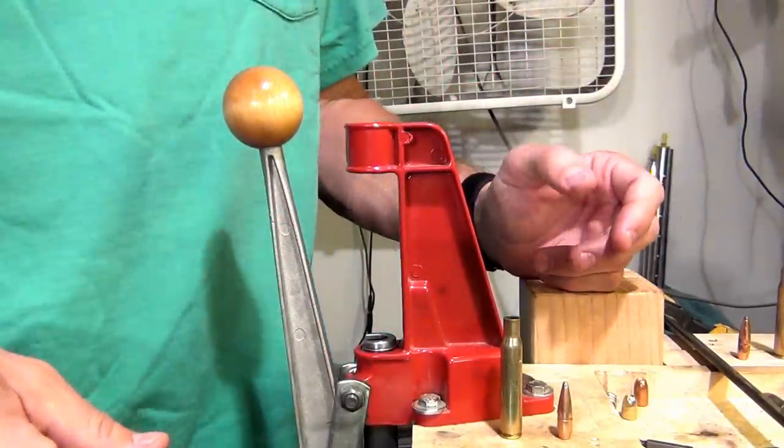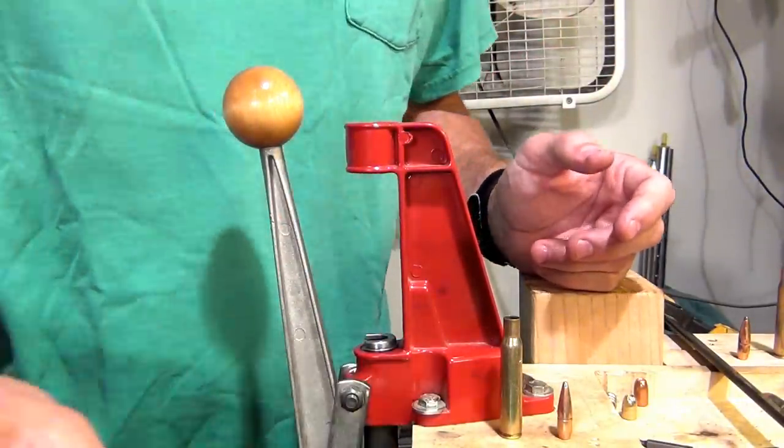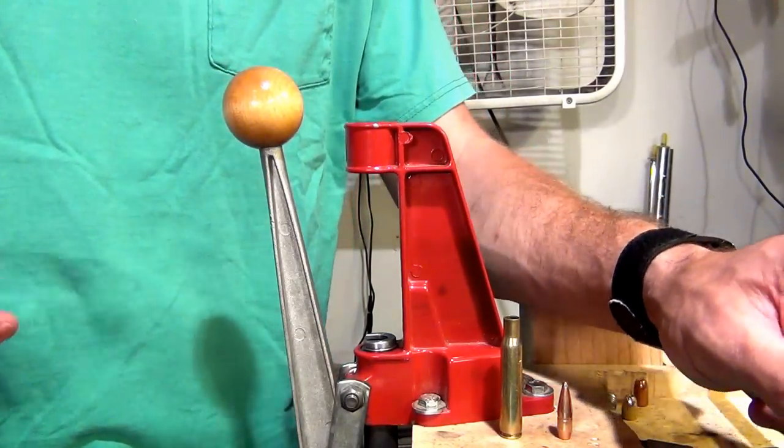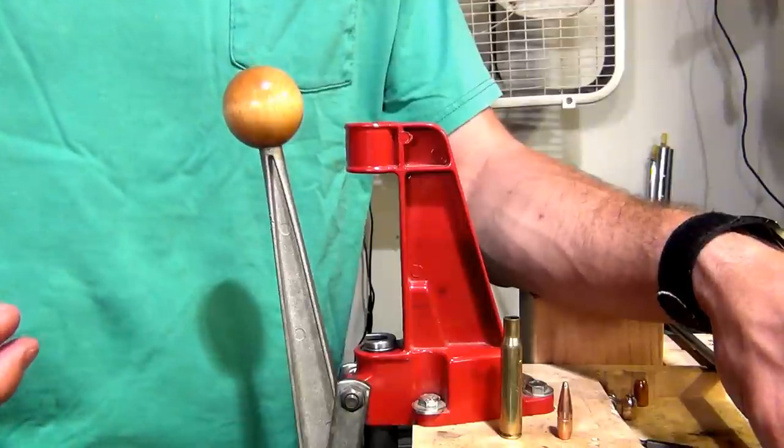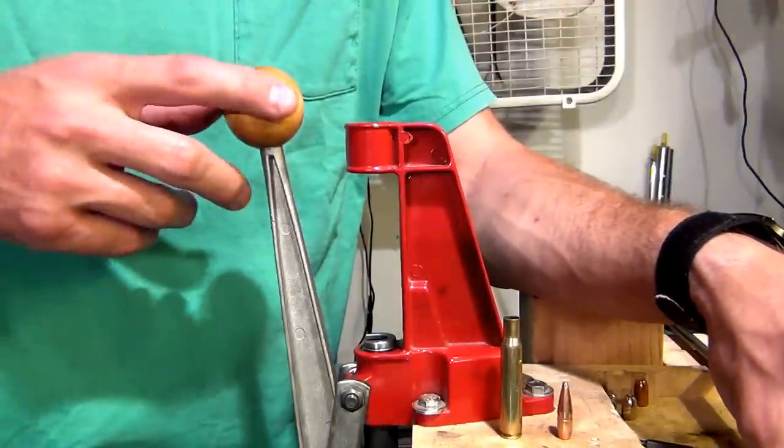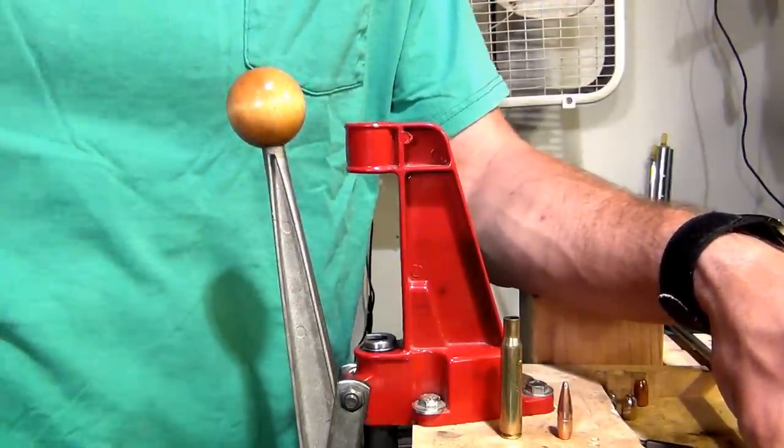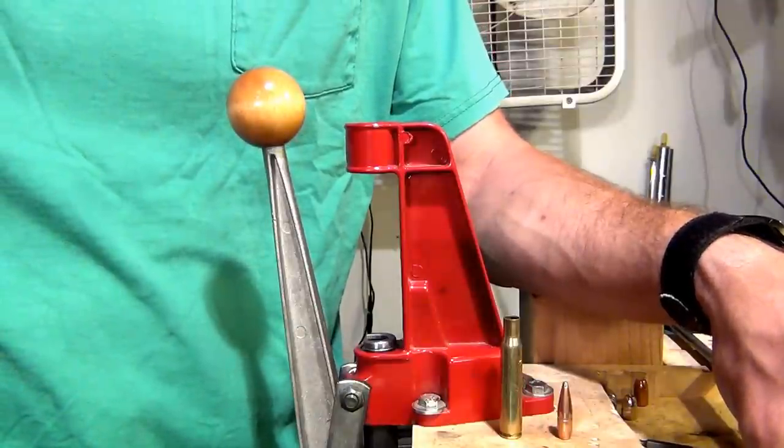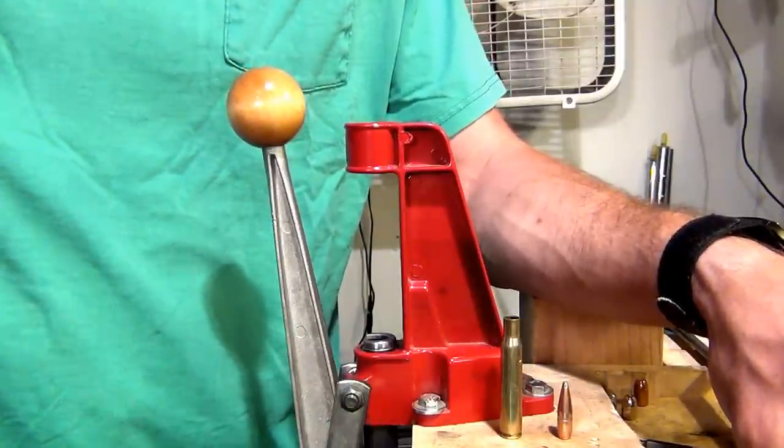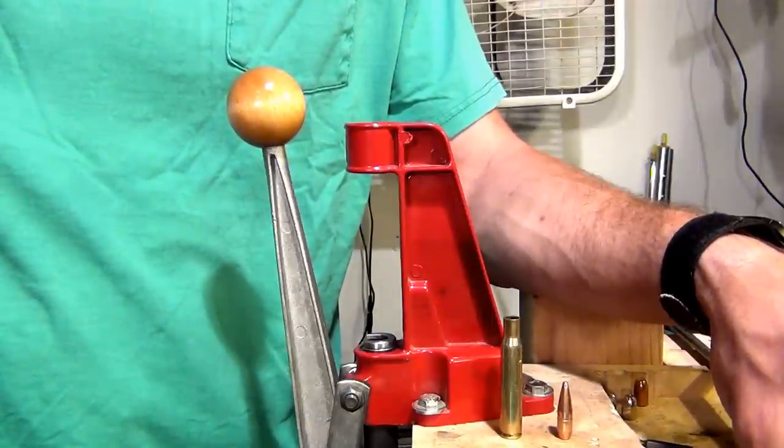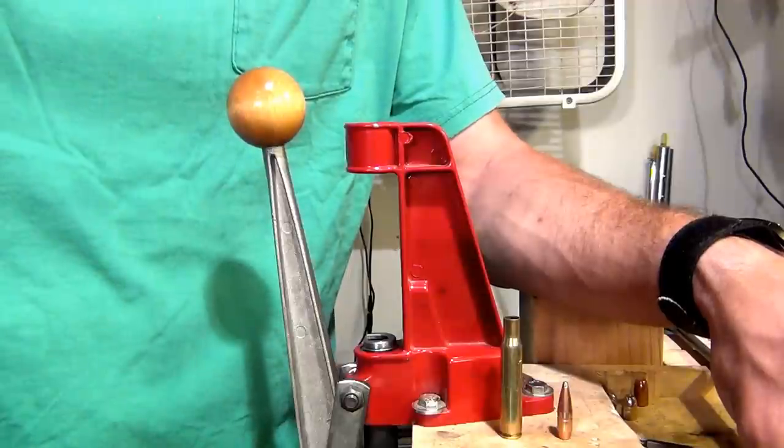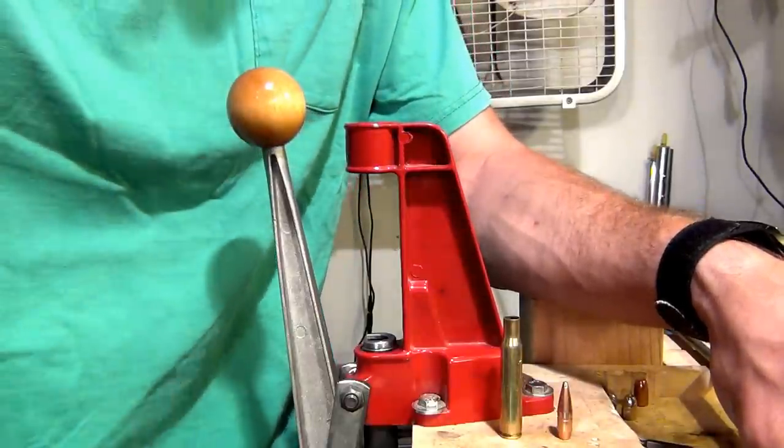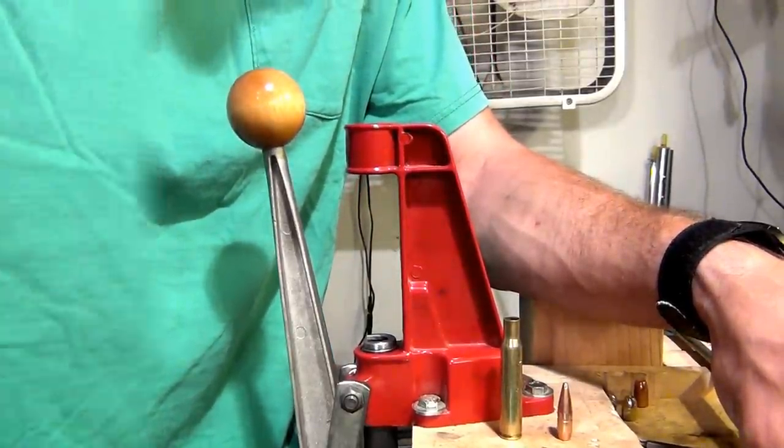I'm going to break this video down into three sections. The first section will be how to set up the decapping die, decap and resize the case. The second section will be how to set up the bullet seating die for bullet seating. And the third and final section will show how to take that bullet seating die and establish a crimp on your bullet. So I hope this information is useful. Stay tuned.